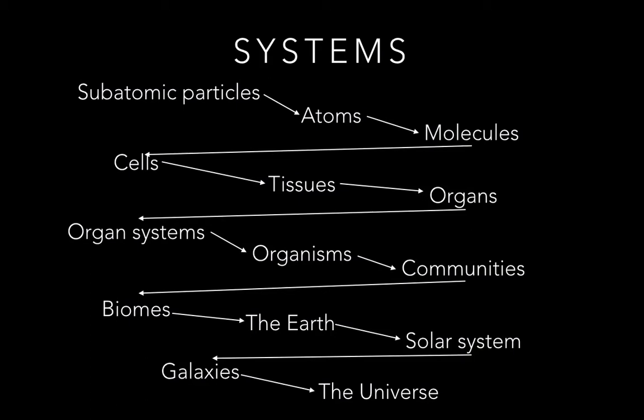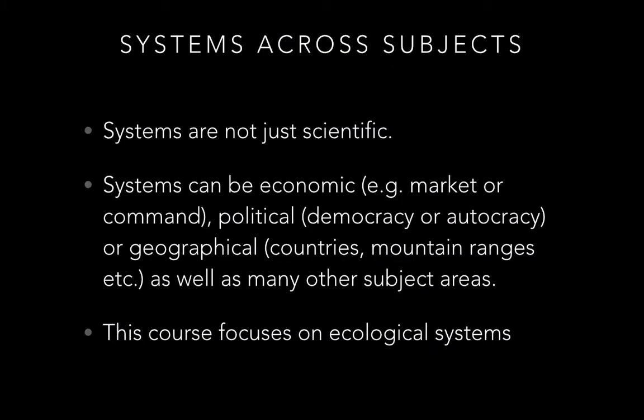A system consists of the storages of matter and energy, flows that move in or out of the system, processes which transfer matter or energy from or into the system, and feedback mechanisms which maintain equilibrium and stability in the system.